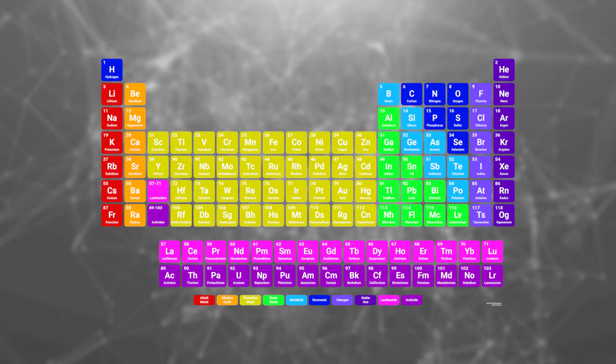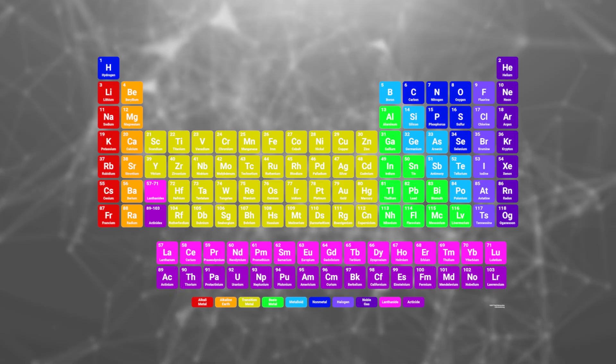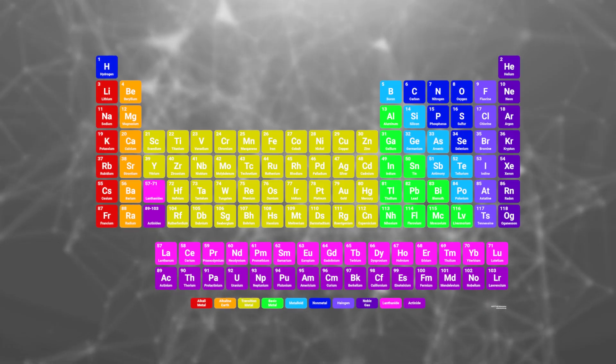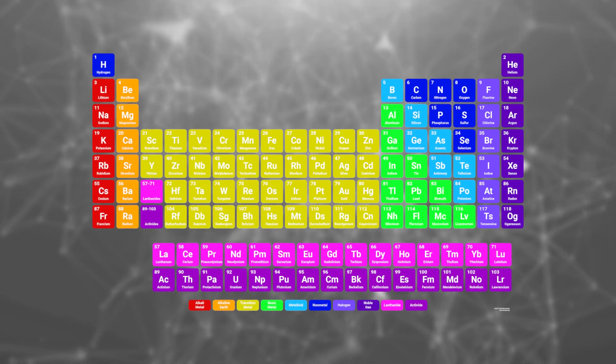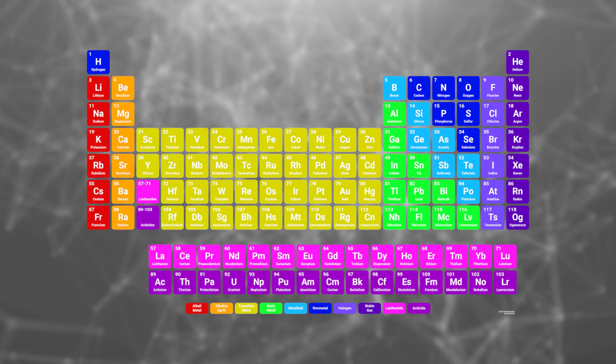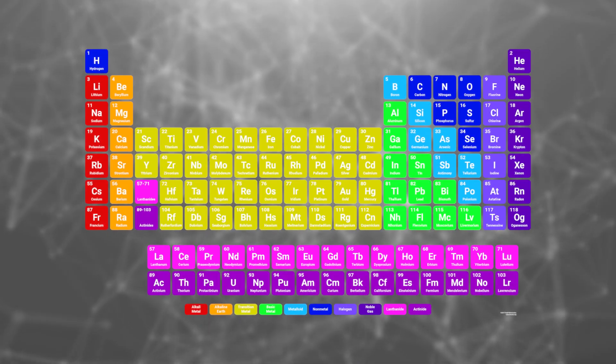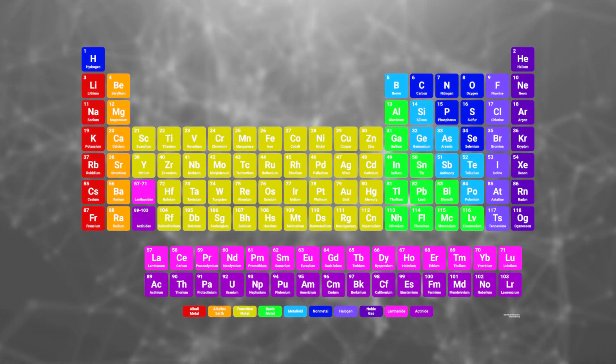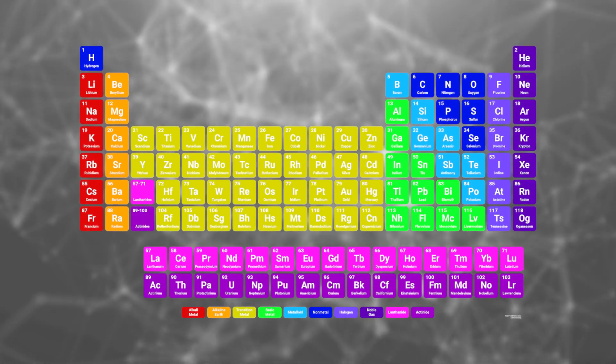The periodic table of chemistry was invented in 1869 by Russian chemist Dmitry Mendeleev. You probably learned about it in a chemistry class. The table consists of rows and columns of elements. Each column consists of elements with similar chemical properties, and the mass of elements is ordered with the lightest ones at the top and the heaviest ones at the bottom.